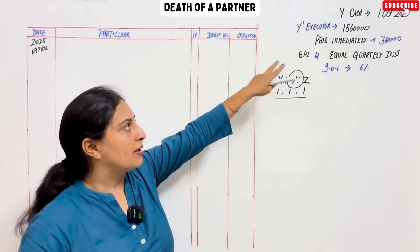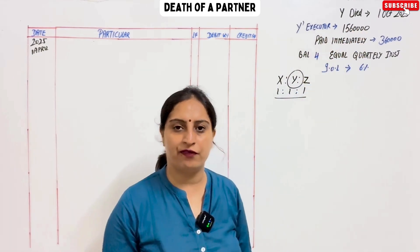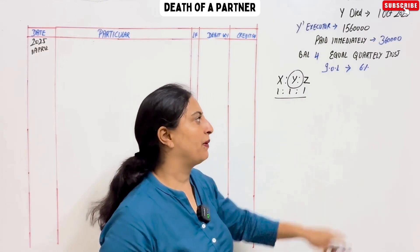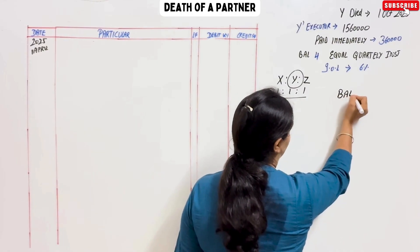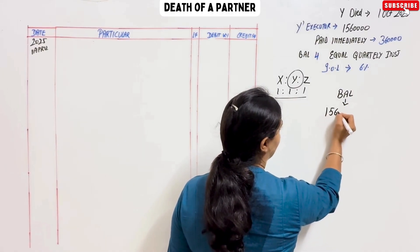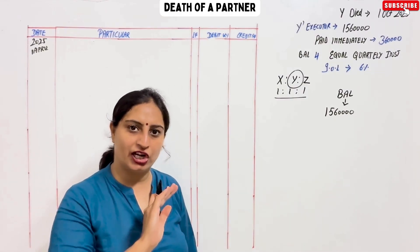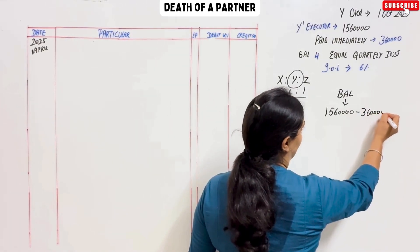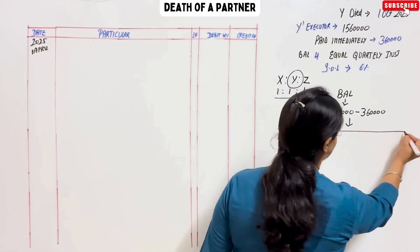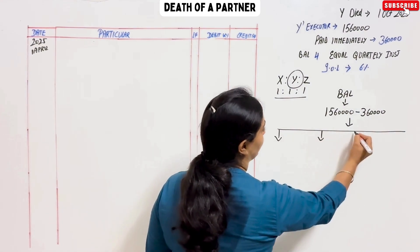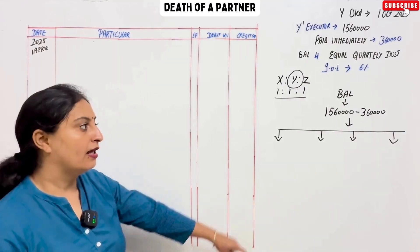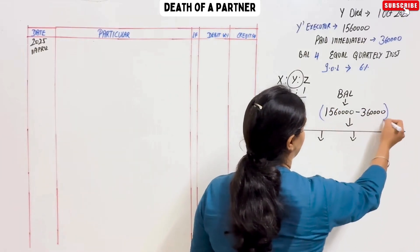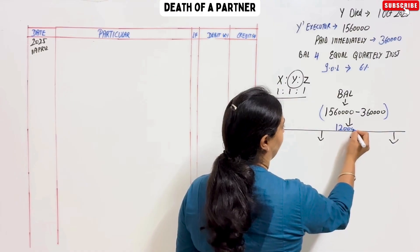In Y's capital account, we will give Y the total balance of 15,60,000. When you have any installment, first of all, you check the total balance — 15,60,000. Then minus the immediately paid amount of 3,60,000. After that, the remaining balance will be divided. So 15,60,000 minus 3,60,000 gives us 12 lakh. That is the balance to be paid in installments.